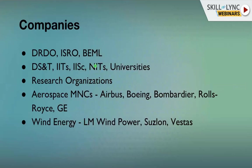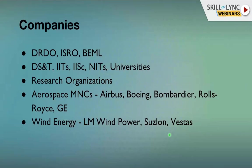Research organizations involved in composites include DRDO, ISRO, IITs, IISc, NITs, and DST. Aerospace MNCs such as Airbus, Boeing, Bombardier, Rolls-Royce, GE, and GKN are all active in composites research, development, manufacturing, and end applications. Wind energy companies also extensively use composite materials.